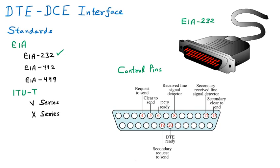Pin number 4 is Request to Send. Whenever you want to send data to someone, a request is generated to check whether the other party is ready to receive. That request is generated using pin number 4. If pin number 4 is not working, pin number 19 performs the same operation as secondary Request to Send — this is handled automatically by the system, not the user.